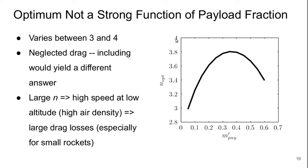Now again, we've neglected drag. Including this would yield a different answer. For drag, if we had a large N, that would mean the rocket would hit higher speeds at low altitude where air density is high. That would increase the drag losses, especially for small rockets. But the main takeaway here is that the optimum value of N is in the vicinity of about 3.5 for over a very wide range of payload fractions.